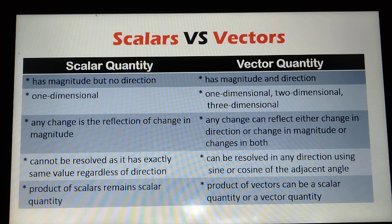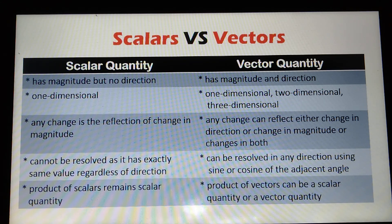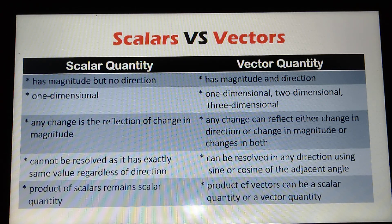Scalar and vector are physical quantities because they can be quantified. They can be measured or calculated from other physical properties and expressed as the product of a numerical value and a physical unit. In short, they are measurable.